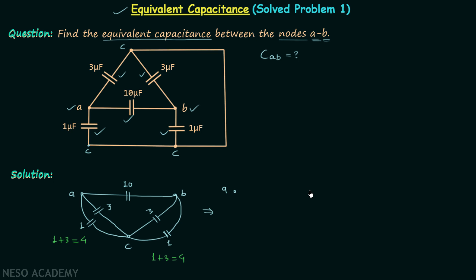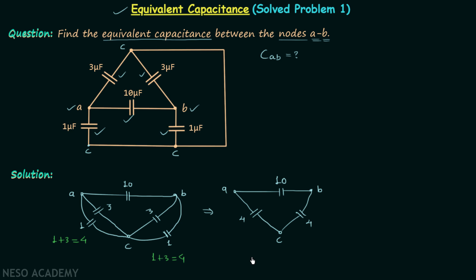In the modified network, between A and B we have the 10µF capacitor, and between A and C and C and B we have the 4µF capacitors. These two 4µF capacitors are in series, giving a single equivalent capacitor of 4 multiplied by 4 divided by 4 plus 4, which equals 2µF.